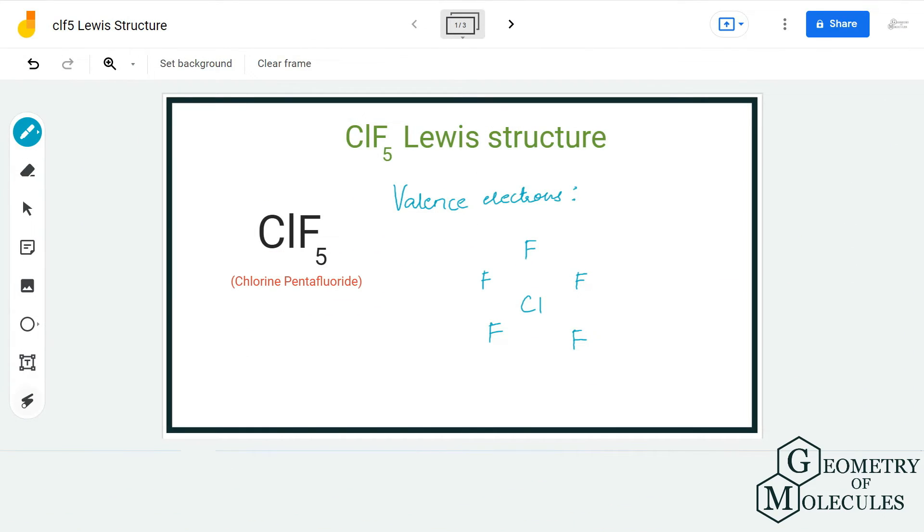Hi guys, welcome back to our channel. In today's video we are going to help you determine the Lewis structure for ClF5 molecule. It is the chemical formula for chlorine pentafluoride, and to determine its Lewis structure we are first going to look at the total number of valence electrons.